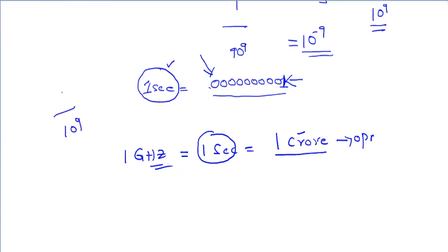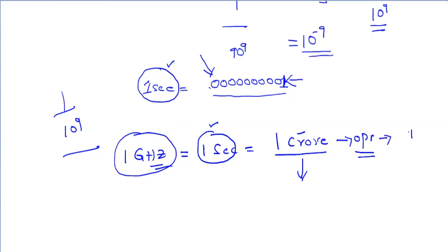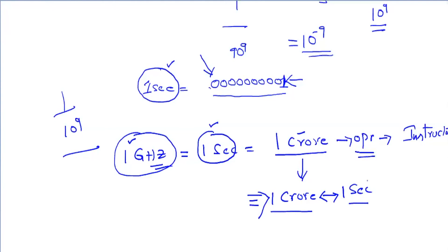CPU is capable of executing 1 crore operations in 1 second for a 1 gigahertz CPU. Let us take that each operation is an instruction. Provided we can supply the instructions to the CPU, it will be able to execute 1 crore instructions in 1 second. CPU is very fast — and we are considering that each operation performed by the CPU is simply an instruction execution.